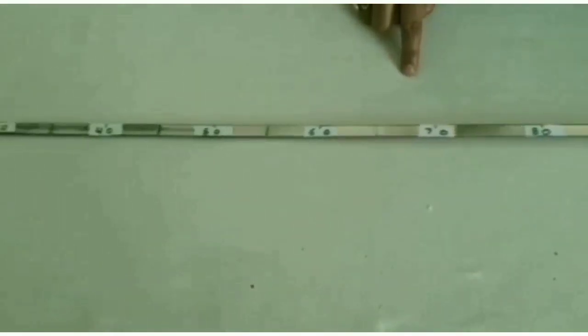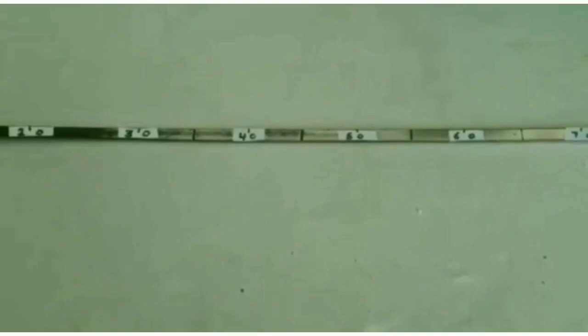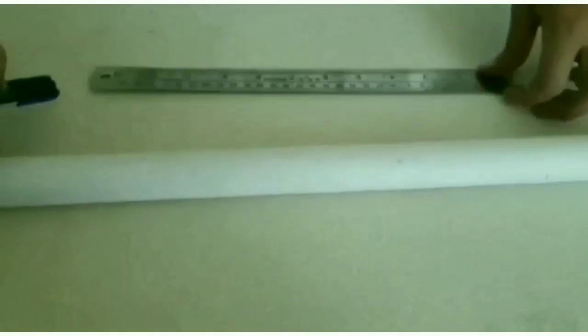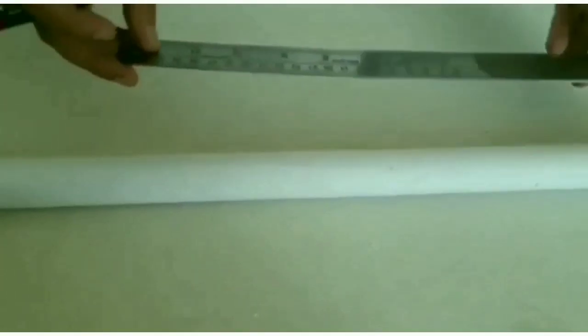Students, now you know there are hundred centimeters in a meter rod. Let us learn how to make a meter rod with the help of a wooden stick and a scale. First of all, with the help of this scale, we will mark ten dots at the gap of ten centimeter each on this rod.